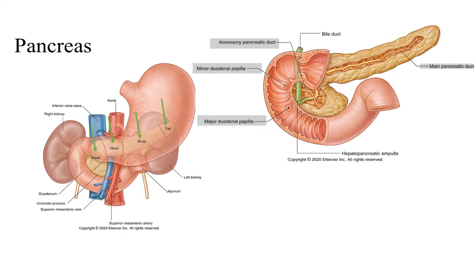Now moving on to the pancreas. Remember, the pancreas is both an endocrine and an exocrine organ. The endocrine function secretes insulin and glucagon to help regulate glucose levels in your blood and the amount of sugars your cells take up. Since this is anatomy class, we're concerned with where it is and what it looks like. The pancreas can be found within the C-shaped loop of the duodenum, nestled in there, and it has four different parts.